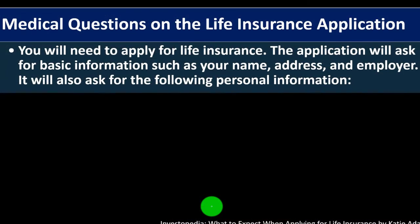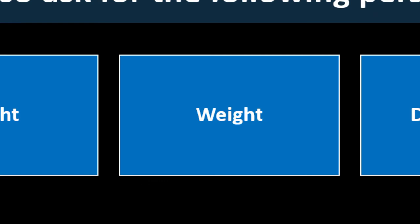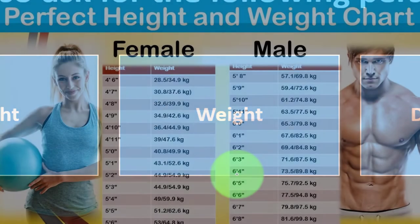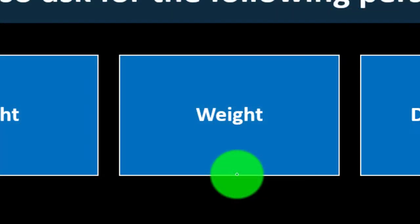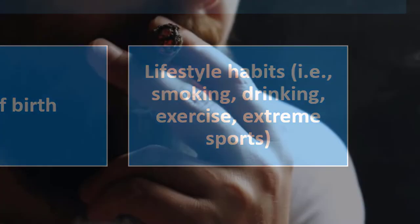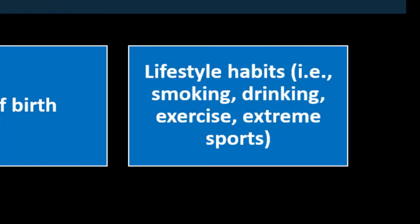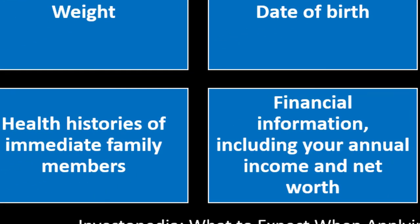You will need to apply for life insurance. The application will ask for basic information such as your name, address, and employer. It will also ask for personal information including your height and weight — useful for determining weight-related health risks — your date of birth, lifestyle habits such as smoking, drinking, and exercise, and financial information including your annual income and net worth.